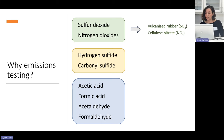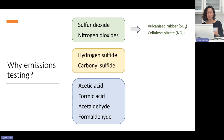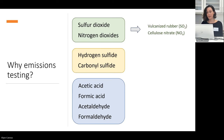Sulfur dioxide and nitrogen dioxide are primarily known as outdoor pollutants, but there are some materials that can produce these emissions. For example, objects made of cellulose nitrate can produce nitrogen dioxide — and hopefully these types of materials, since they are quite flammable, are safely isolated somewhere in your collection. Also, vulcanized rubber has been known to produce sulfur dioxide emissions.